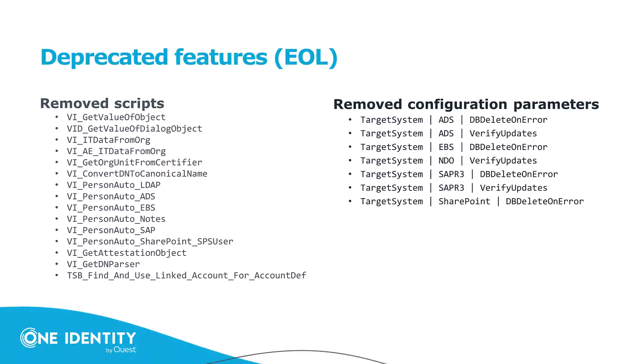Now let's talk about deprecated features. Deprecated features are features that have reached end of life — they were removed with the 9.2 release of the Identity Manager. On the left-hand side you can see a number of scripts no longer in the database, and on the right-hand side a number of configuration parameters also no longer necessary. In these cases the functionality has been solved in a completely different way, so those scripts and configuration parameters are not needed anymore. For anyone using them in customized scripts or other customizations, now is the time to update and adopt the new standard.